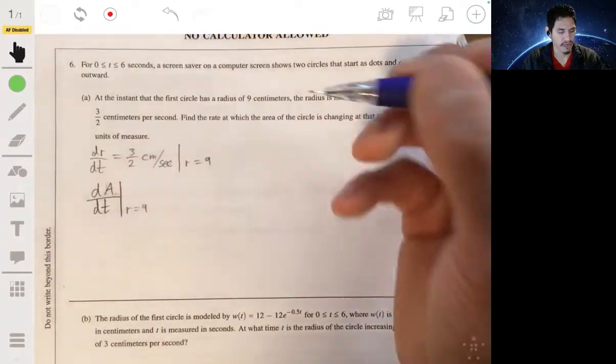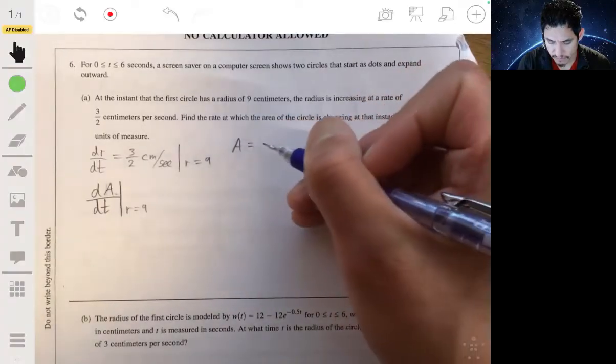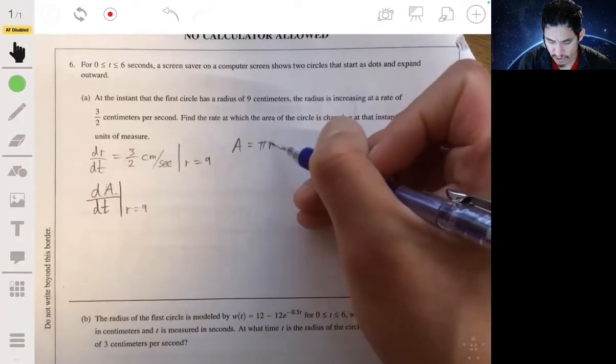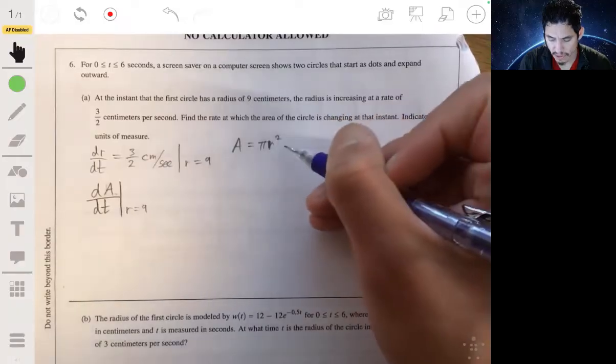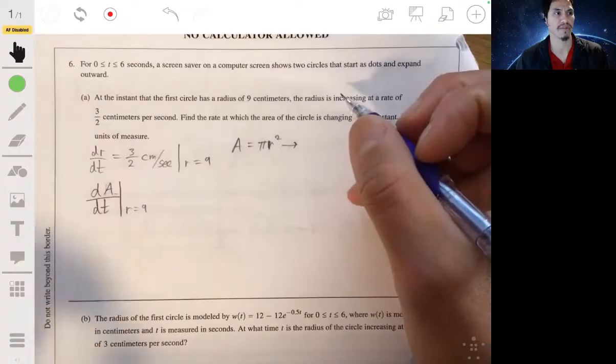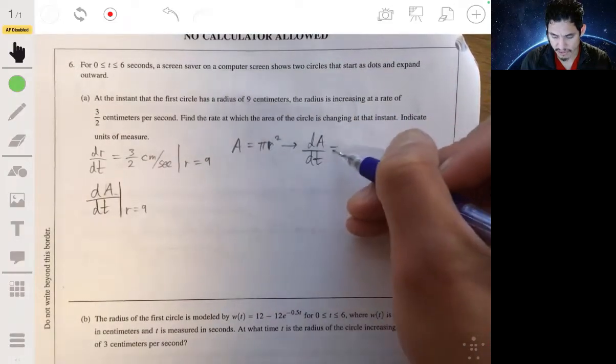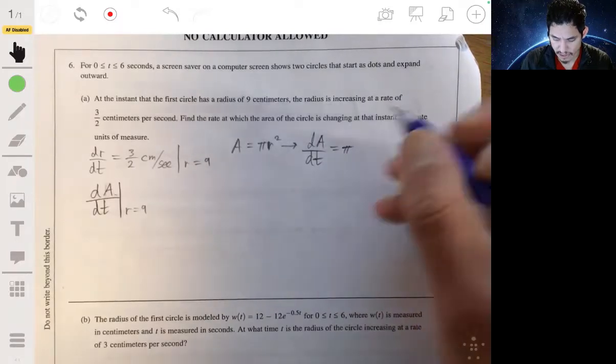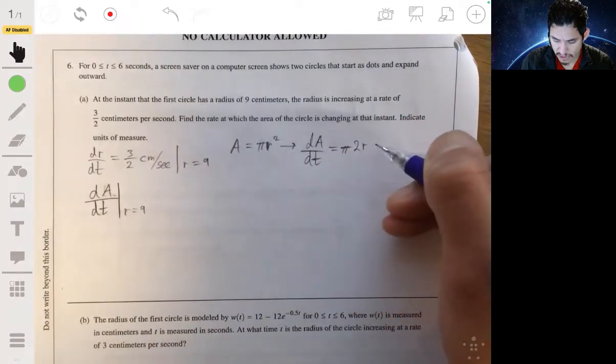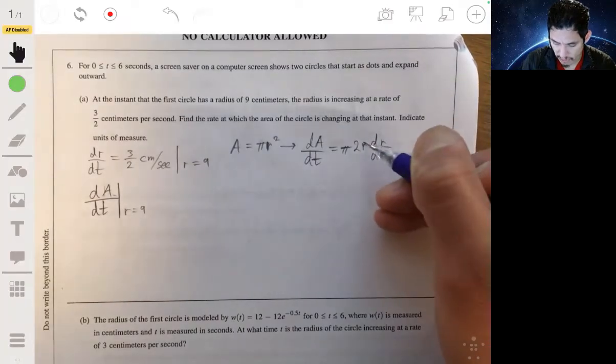Okay, so let's first write out the area of a circle, which is A = πr². And so if we want to find the derivative of the area of a circle with respect to time, that would be dA/dt equals π times 2r times dr/dt using chain rule.